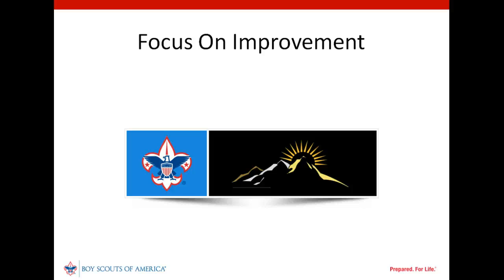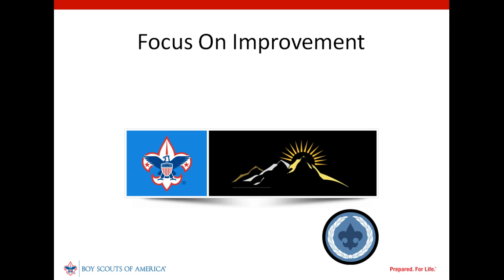Improving these leading indicators helps the unit improve a quality program, leading to a unit's ability to attract and retain youth and adults. As a result, there is only one place in Commissioner Tools where a reference to Journey to Excellence is found. In step six of the detailed assessment function, it is possible to indicate which JTE award the unit is striving to achieve. No ranking is an option in addition to bronze, silver, and gold.